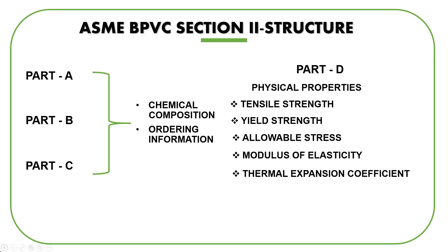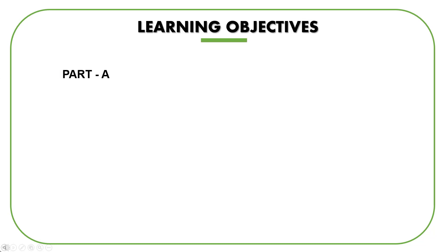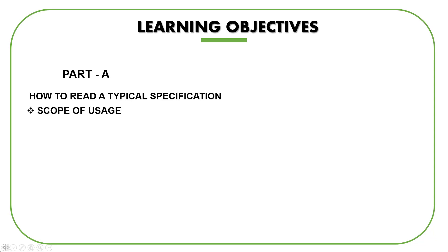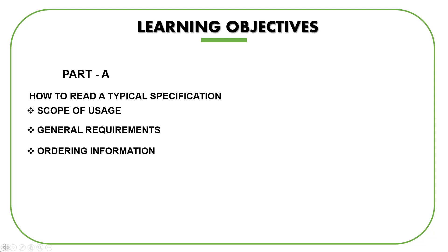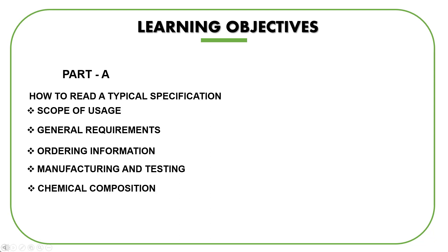As the pressure vessel industry mainly deals with ferrous material, our focus in this module will be on Part A. The goal of studying Part A will be to learn how to read a typical material specification. You'll be exposed to different parts of a typical specification like scope of usage, general requirements, ordering information, specifics related to manufacturing and testing, and chemical composition. We'll look at a commonly used material specification, SA 516, go through the specification, and see what we can get. Once you know how to read this specification, you'll be able to read the others by yourself.